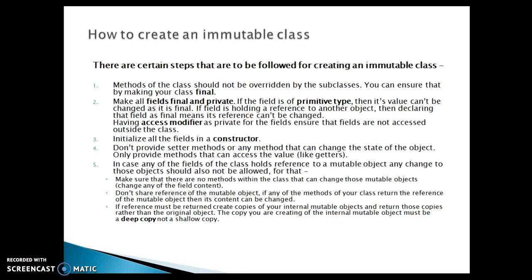So let's see how we can create an immutable class in Java. There are certain steps that are to be followed. The first step says methods of the class should not be overridden by subclasses. You can ensure this by making your class final, so that no other class can create a subclass of it and try to change the state of the object.